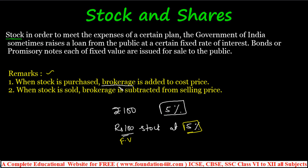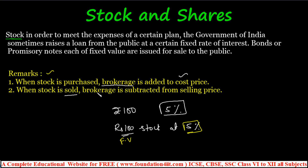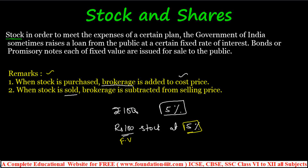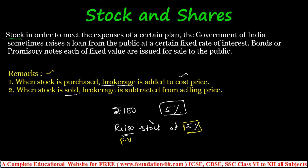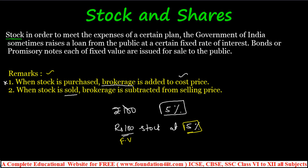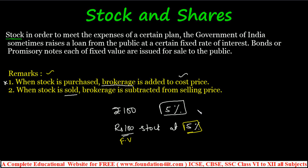If you purchase the stock, the brokerage is added to the cost price. If stock is sold, the brokerage is subtracted from the selling price. Remember: by purchasing, brokerage is added; by selling, brokerage is subtracted from the selling price.